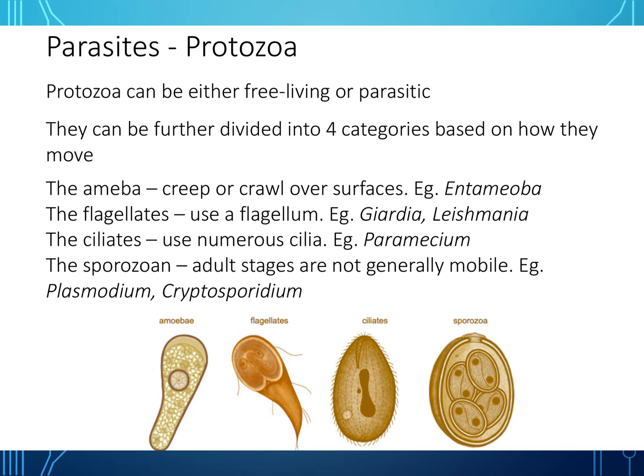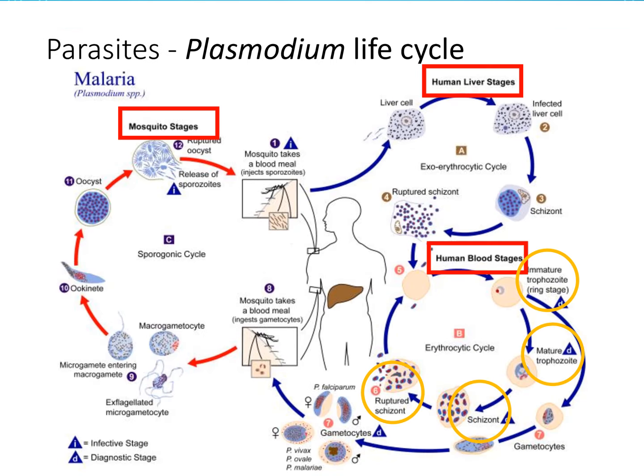A notable example: the disease malaria is caused by Plasmodium falciparum, transmitted via mosquito bites. Looking at the Plasmodium life cycle diagram, there are many stages — including the mosquito stages, the human liver stages, and the human blood stages. The diagram shows both infective and diagnostic stages. You don't need to memorize it all, but it's worth examining.